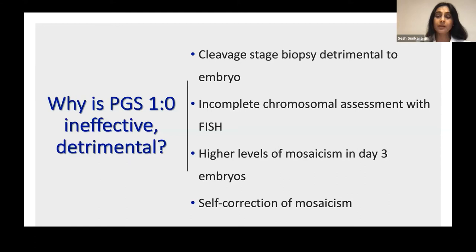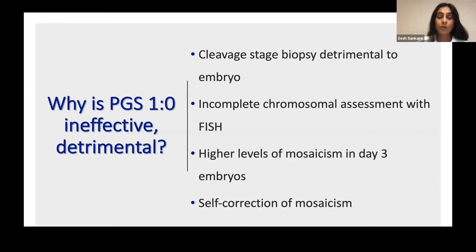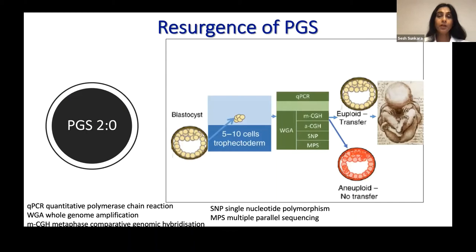If you remove only two cells and there is higher mosaicism in day three embryos, those two cells might happen to be the aneuploid ones while the others are euploid — leading you to discard the embryo unnecessarily. Also, if you tested two blastomeres as aneuploid but it was actually a mosaic embryo, that mosaic embryo is known to self-correct as it grows. So these were the potential reasons why first generation PGS was assumed to be ineffective or detrimental.